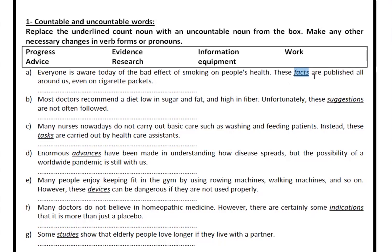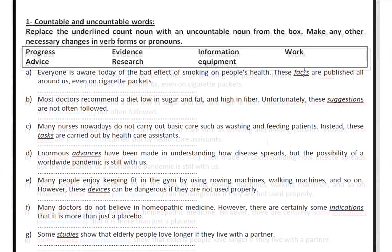By necessary changes, I mean that uncountable words are usually treated as singular. So here, for example, we have 'these facts are published' — a plural word with a plural verb. You need to change this. You're going to say 'this', then the word you choose, and replace 'are' with 'is'. I'll give you some time to rewrite all of these. Pause the video, and then I'm going to show you the answers and we'll discuss them together.